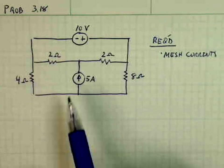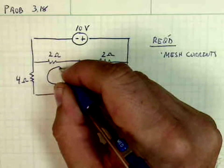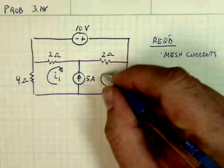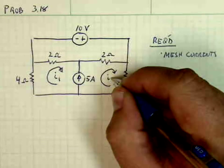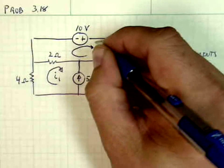So I'm going to define the mesh currents as follows. I'll make them all go in the clockwise direction: I1, I2, and I3.